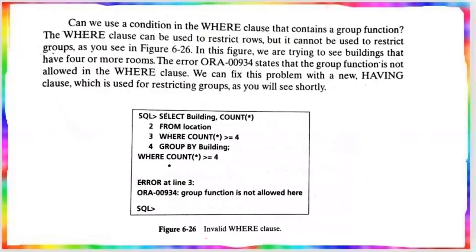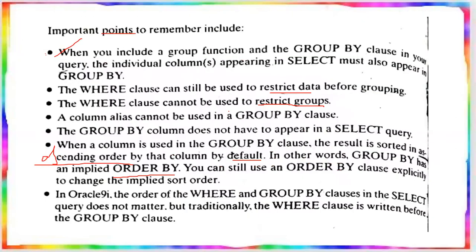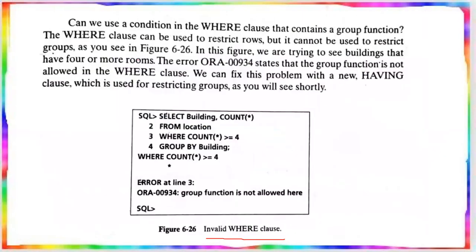An invalid WHERE clause cannot be applied for a group function because the WHERE clause is used only to restrict individual rows, not groups of rows. The group function is not allowed in the WHERE clause. So, for restricting groups, we need a different clause.